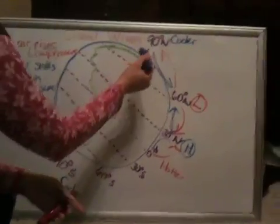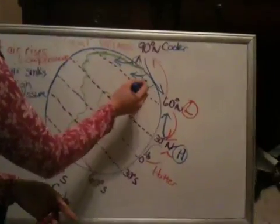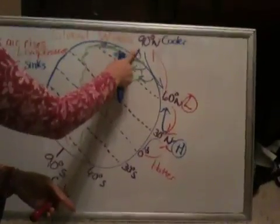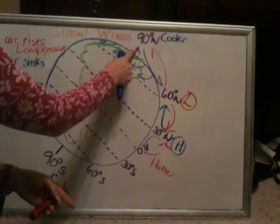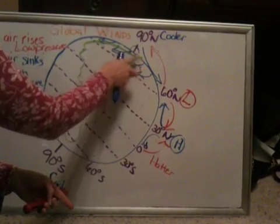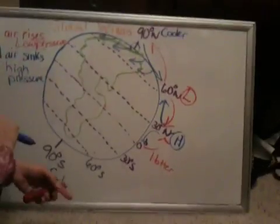What happens is winds that are up here are called polar easterlies. Polar easterlies tells you two things. It tells you where it comes from in the poles and it tells you where it comes from as far as direction east. So polar easterlies are found at the poles and they blow from the east.